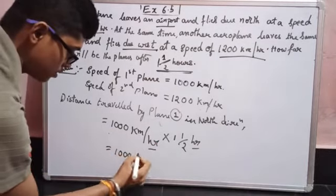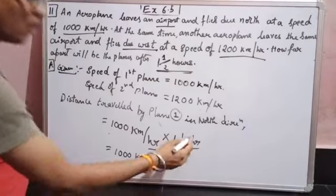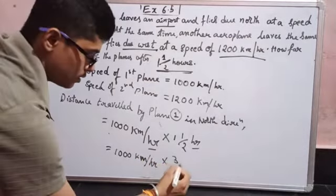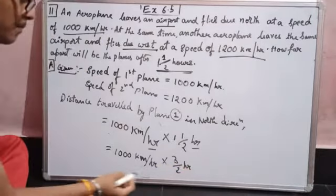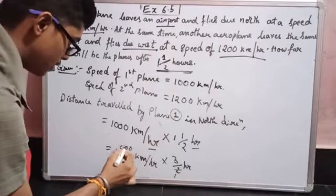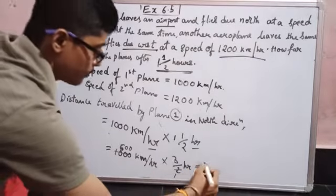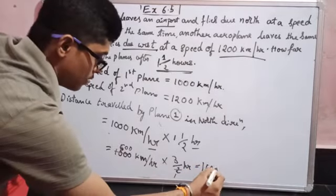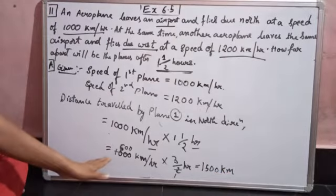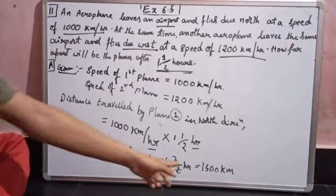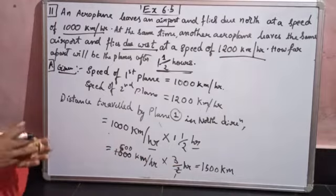Distance traveled by plane one: 1000 kilometers per hour multiplied by one and a half hours, which is three by two. That gives us 1500 kilometers. So plane one has traveled 1500 kilometers in the north direction.